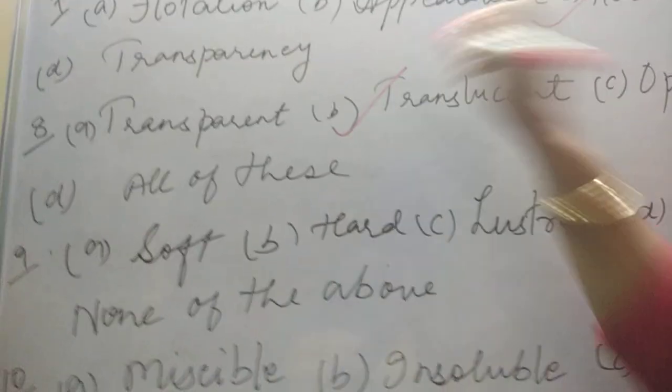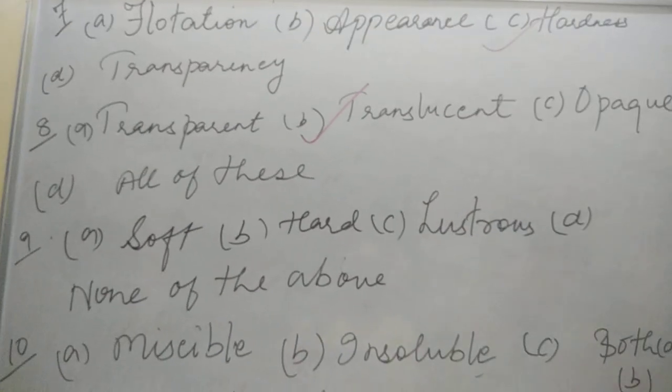So the option will be option number B, partially, that is translucent.